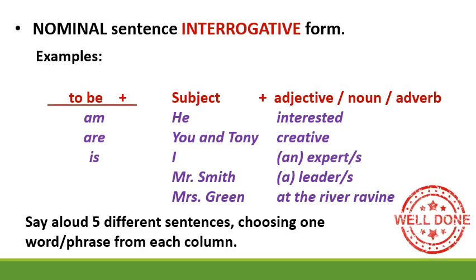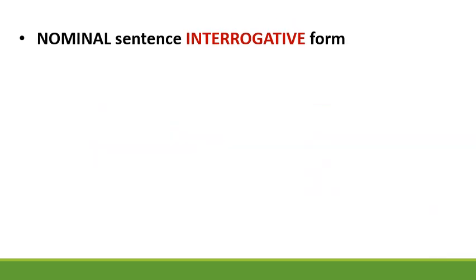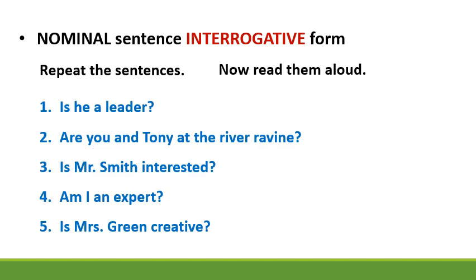Well done. And lastly, nominal sentence interrogative form — repeat the sentences. Listen carefully. One: is he a leader? Two: are Mrs. and Tony at the river ravine? Three: is Mr. Smith interested? Four: am I an expert? Five: is Mrs. Green creative? Now read them aloud. Did you get them right?